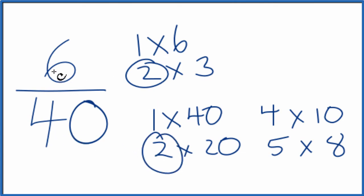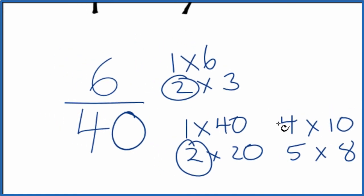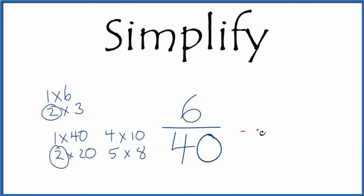So we'll divide 6 by 2 and then 40 by 2, and that should give us the simplified fraction for 6/40. Let's move this over here. So 6 divided by 2, that's 3. 40 divided by 2, that's 20.